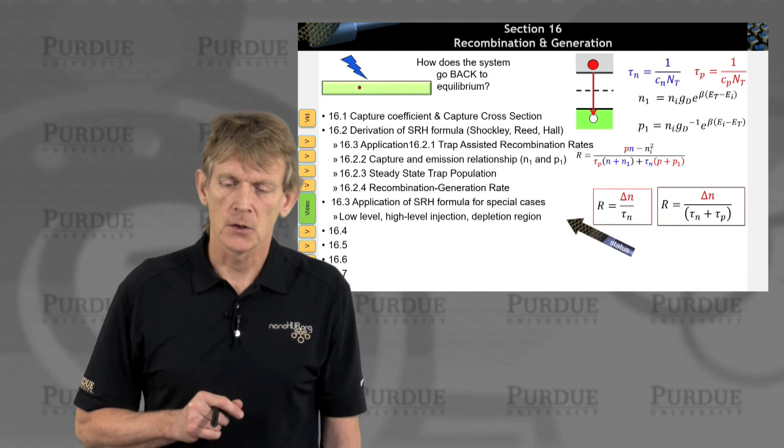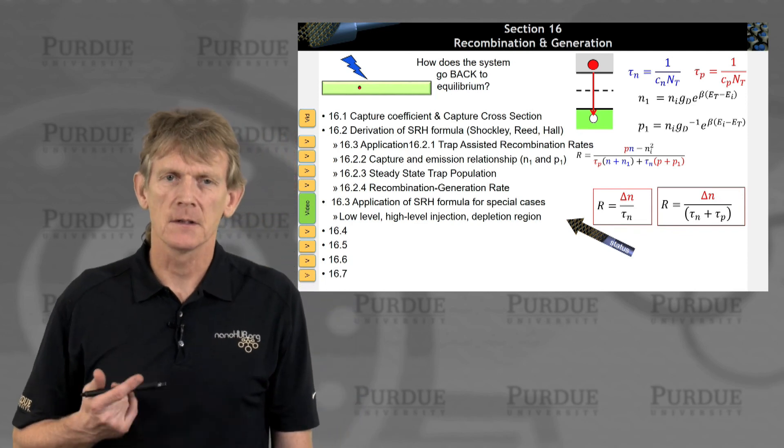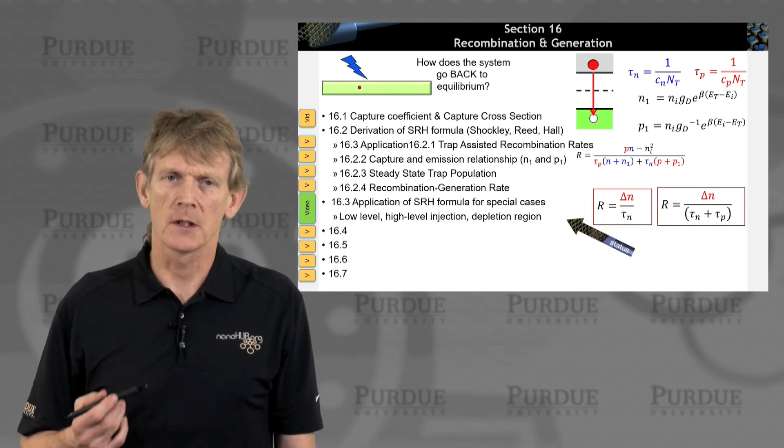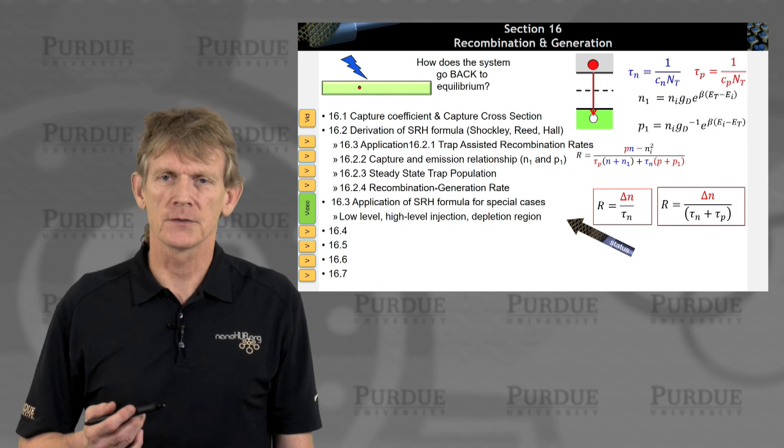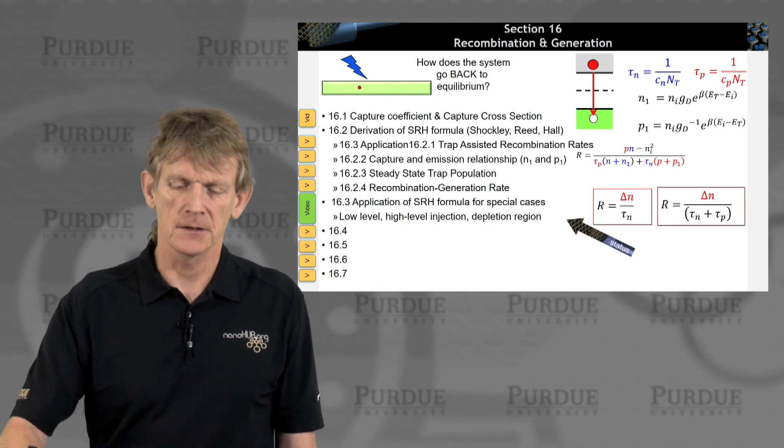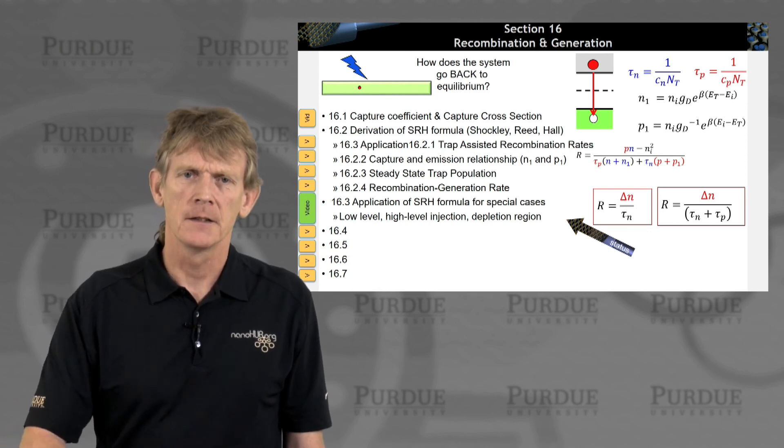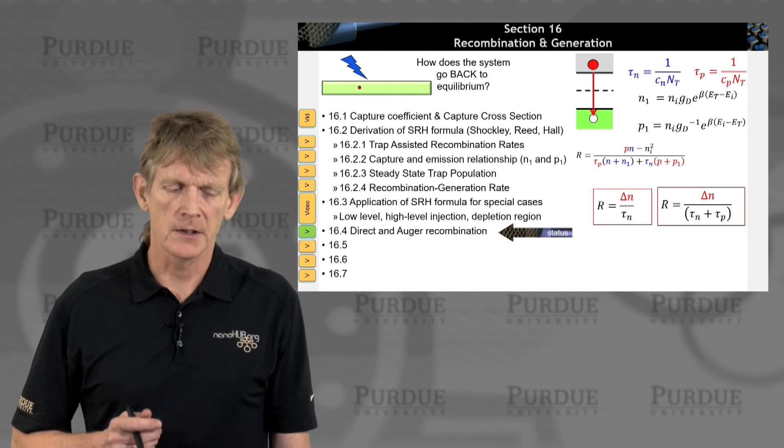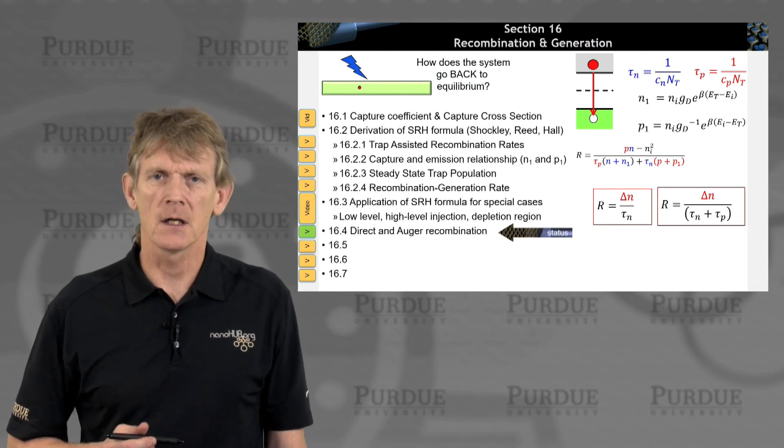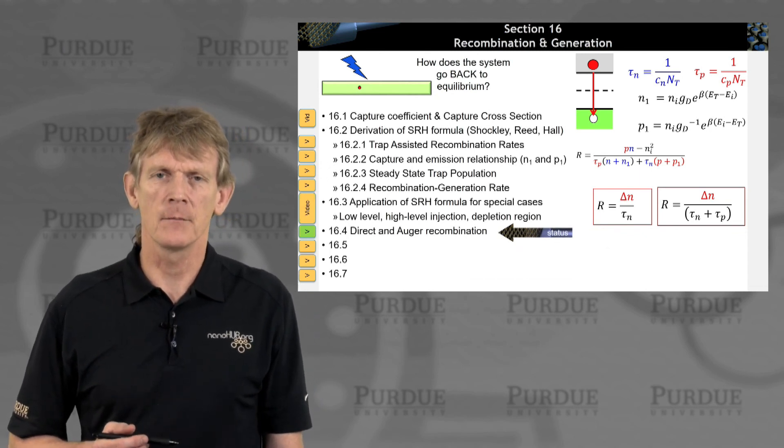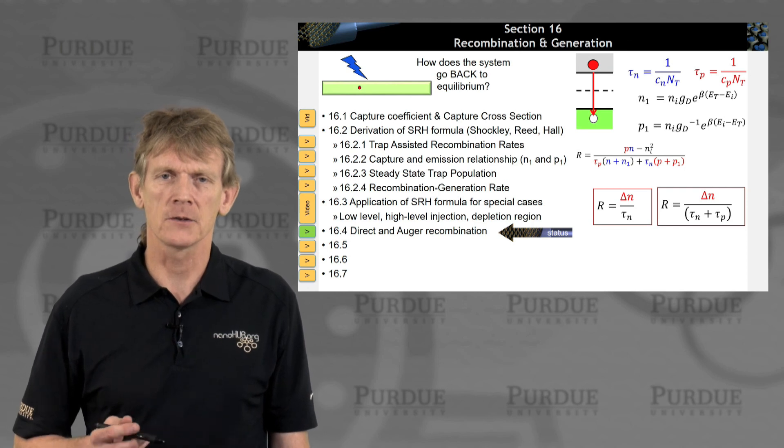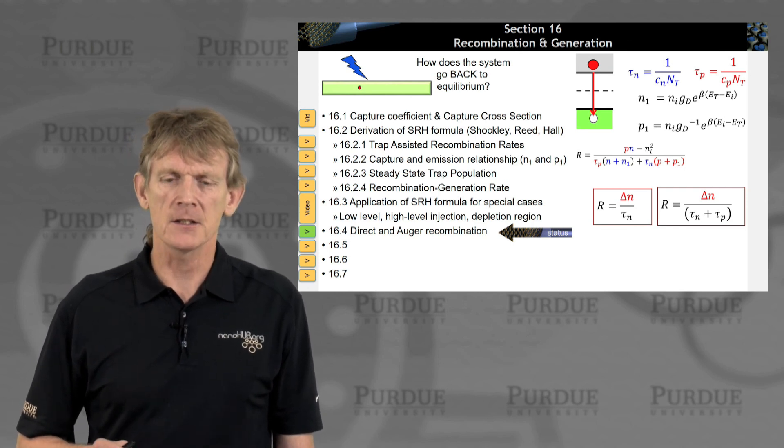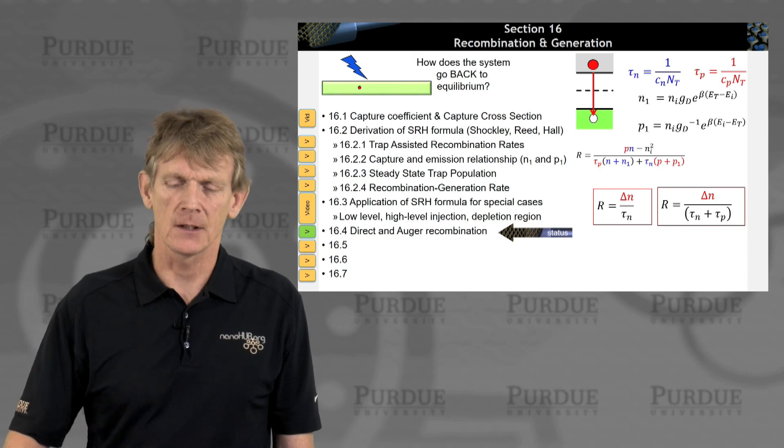Good. So these are some examples that we need for real devices. And those numbers show up again, and these expressions show up again. Now we're ready to look at some very different recombination generation mechanisms, called direct and Auger recombination, and that will be in the next section. So I'll see you then.